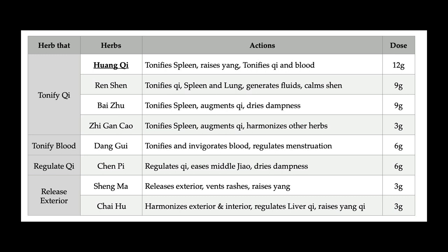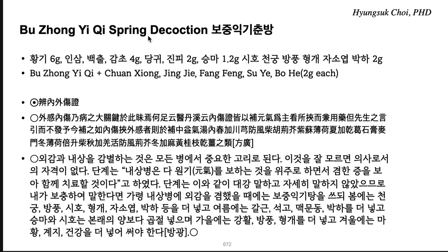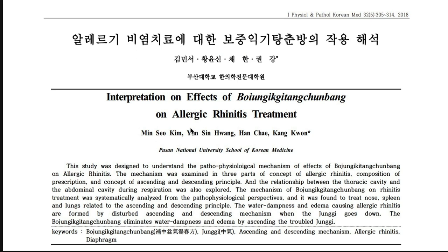For example, there is a Bujong Ichi Tang spring decoction. 'Spring decoction' means it would be like spring and better in the spring season, with releasing exterior herbs inside Bujong Ichi Tang. This ancient text says: add Chanseong, Jingjie, Fang Feng, Suye, and Bohe, 2g each, to Bujong Ichi Tang. This is called the Bujong Ichi Tang spring decoction — used for allergies and rhinitis.